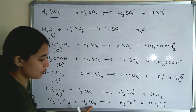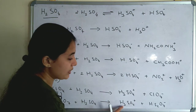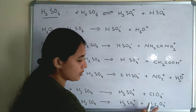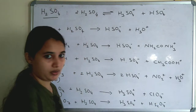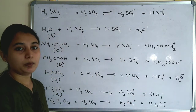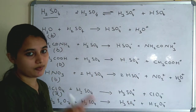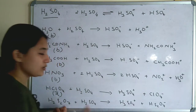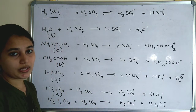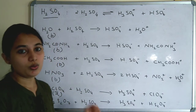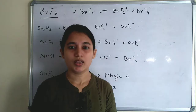H2S2O7 + H2SO4 → H3SO4⁺ + HSO4⁻. So all other compounds are bases in sulfuric acid except perchloric acid and H2S2O7.